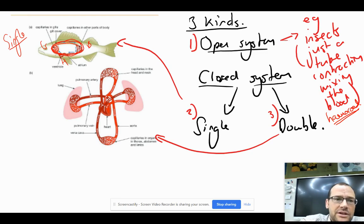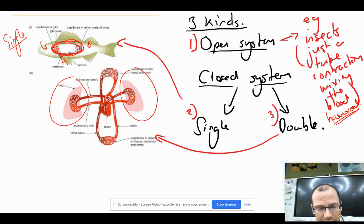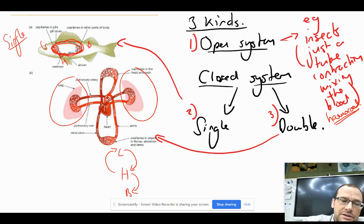Then we have double system like ours, also like amphibians, birds, reptiles - mammals as well. So we have two systems. We have one that's concerned with a pulmonary system where the lungs are involved. So it goes heart, lungs, back to heart. And then we have another loop whereby we have heart to body and back to heart. So two systems: the pulmonary system and the systemic circulation.